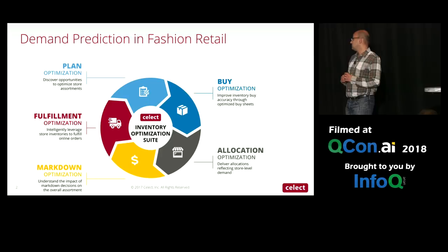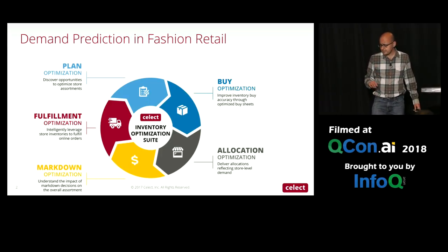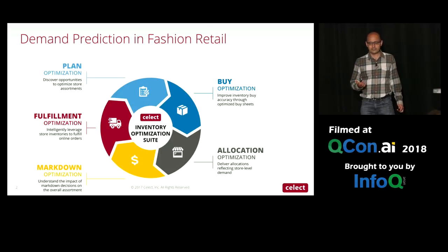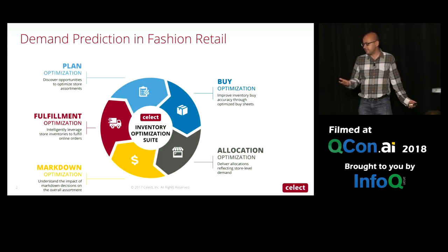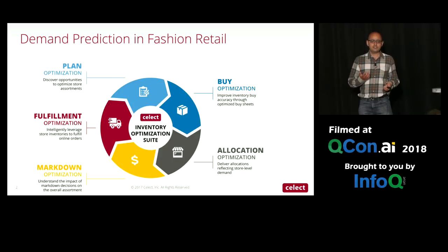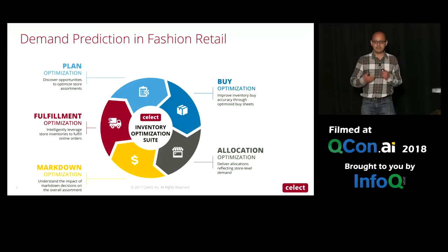The next phase is the buy optimization phase, and that will be the focus of this short talk. This is the phase which occurs about one quarter in advance of actually placing the product in the store. So if it's fall 2017, I'm looking at products for winter 2018 and figuring out: these are the products I see on the market, and in fashion that changes every year. How many should I buy? Of what styles? Put them in what stores? Retailers are making decisions around these.